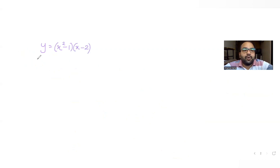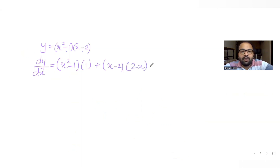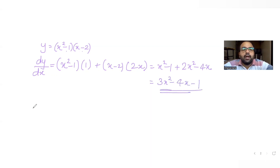To find the slope, we differentiate y equals x squared minus 1 into x minus 2 with respect to x using the product rule. That gives us dy/dx equals x squared minus 1 times 1 plus x minus 2 times 2x, which expands to x squared minus 1 plus 2x squared minus 4x, giving us 3x squared minus 4x minus 1.